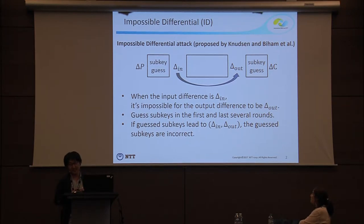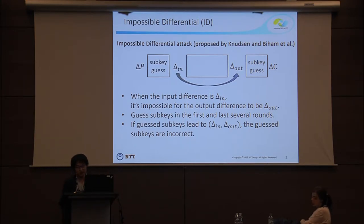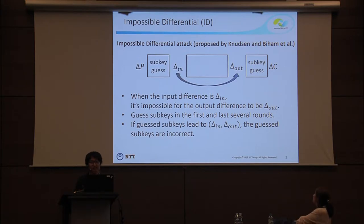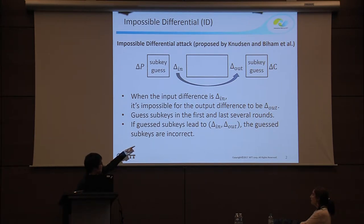So if we want to attack the entire block cipher using these characteristics, we guess subkeys in the first and last several rounds, and we compute delta-in and delta-out from delta-P and delta-C respectively. If the guessed subkey leads to an impossible differential, we know those guessed subkeys are incorrect. By repeating this procedure, we can recover the secret key. In my talk, we focus on how to find the impossible differential — that is, how to find this property for the middle sub-block cipher.